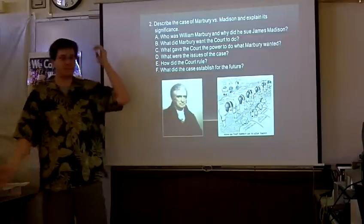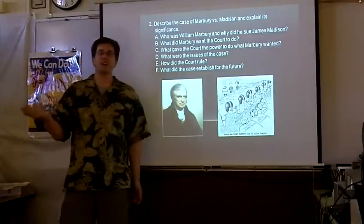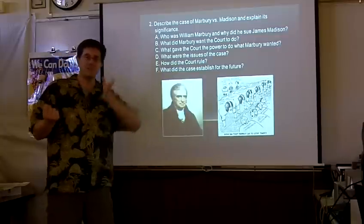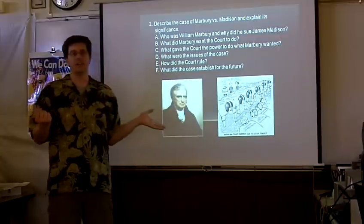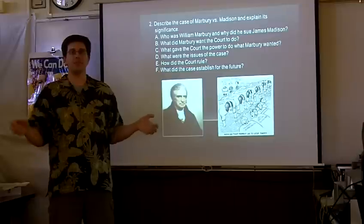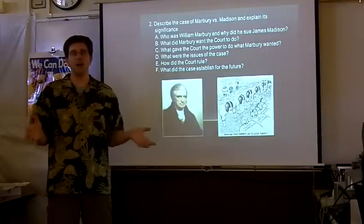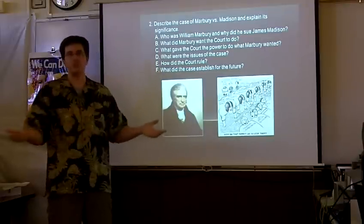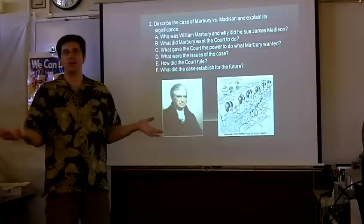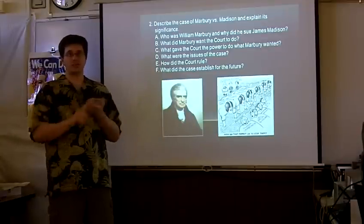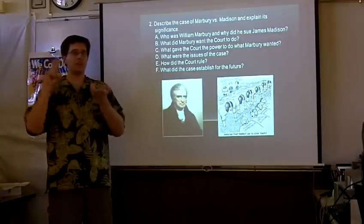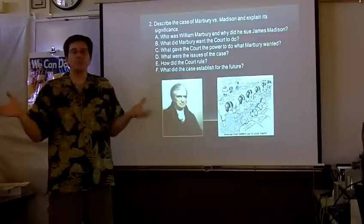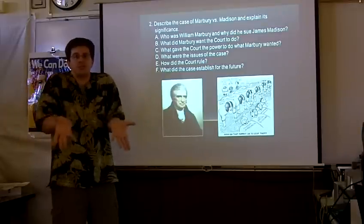So what happened in this case? In 1800, the election transfer of power. Jefferson is coming in, Adams is leaving. Before he leaves, Adams appoints all kinds of jobs and positions. The Federalists are losing power, but they're trying to stack the courts. Every government agency — the customs agents, all kinds of people — they give all their supporters jobs.